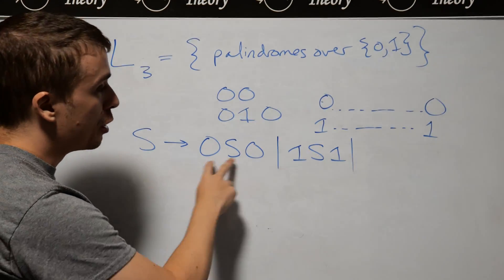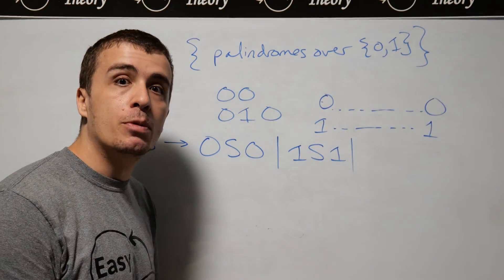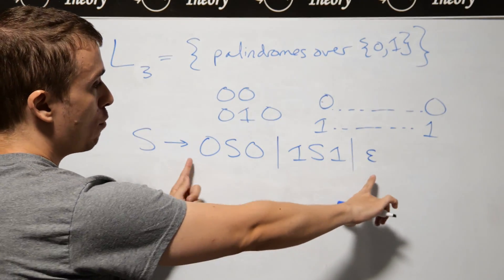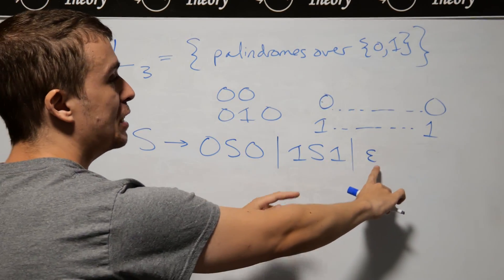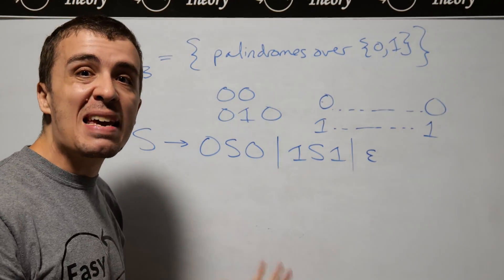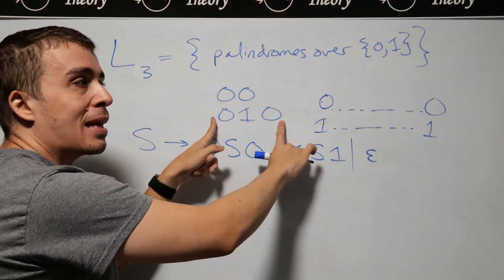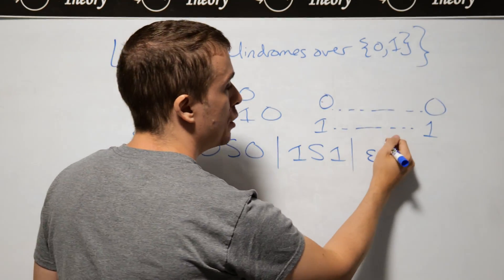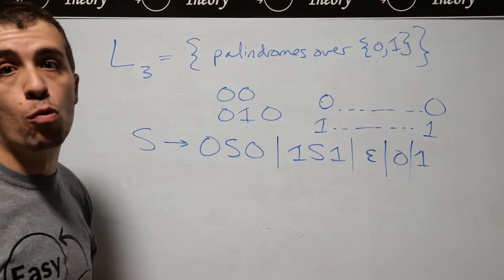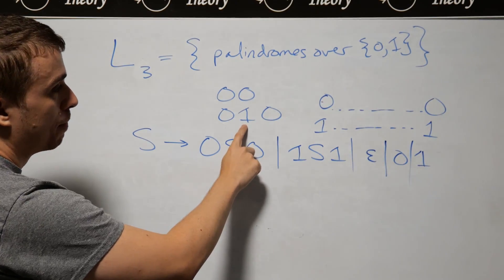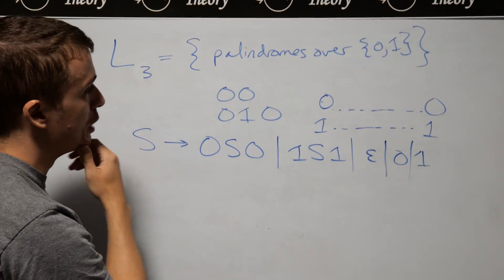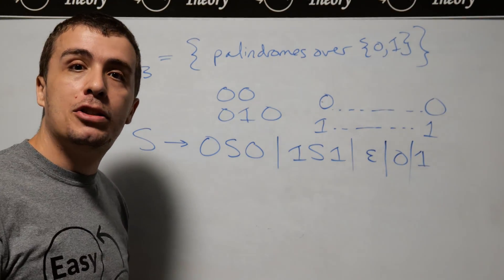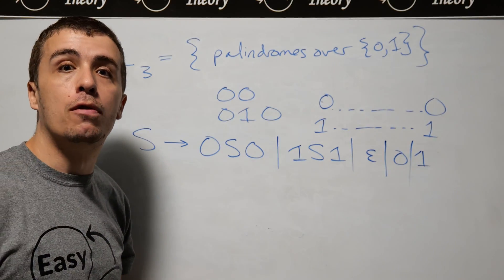What are the base cases? The empty string is a palindrome — it's exactly the same forwards and backwards. But the rules 0S0 and 1S1 only add an even number of characters, so we'll never generate odd-length strings. A string of length 1 is also the same forwards and backwards, so we need to add the base cases S goes to 0 and S goes to 1. Now we can generate any palindrome, and therefore we have made a context-free grammar for all palindromes over {0, 1}.